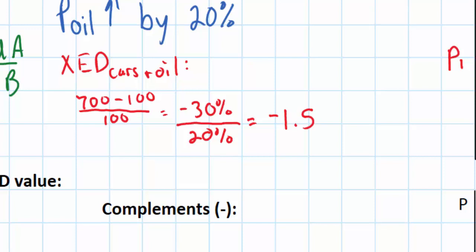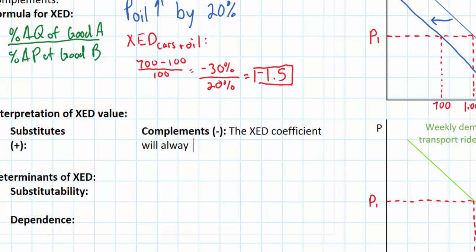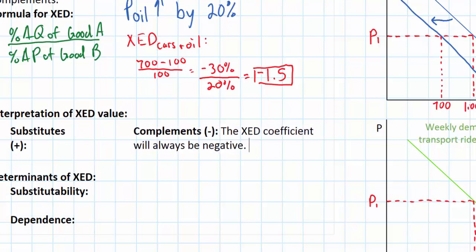The negative sign is very important here. It tells us that the relationship between the price of oil and demand for cars is an inverse relationship, since these goods are complementary to each other. Whenever two goods are complementary to each other, the XED coefficient will always be negative. Any time the price of one good goes up and the demand for the other good goes down, by definition those two goods are complementary, and therefore the XED coefficient will always be negative, as it is for cars and oil in this example.